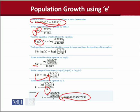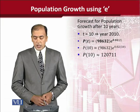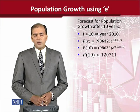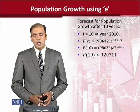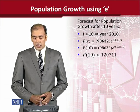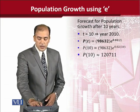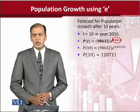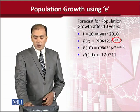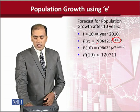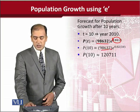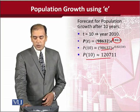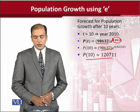This growth rate can help us assess various levels of population at various points in time. As you shall see in the next slide, we are using t equal to 10 — trying to forecast the population after 10 years. Now it is easy because we have the value of k. Simply by putting the growth rate and the initial population, we can get the value of the population in the 10th year.